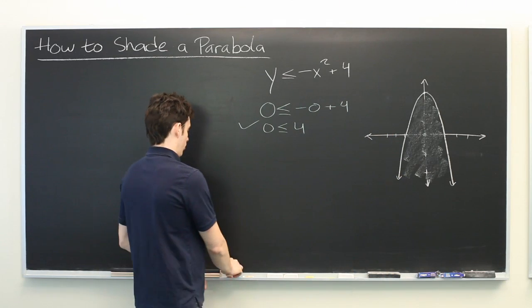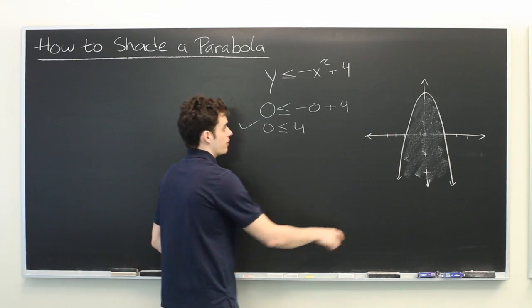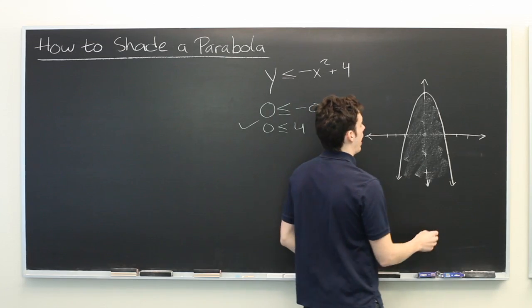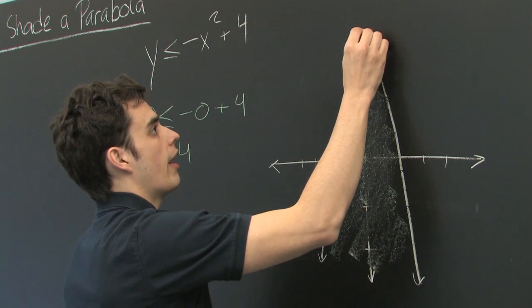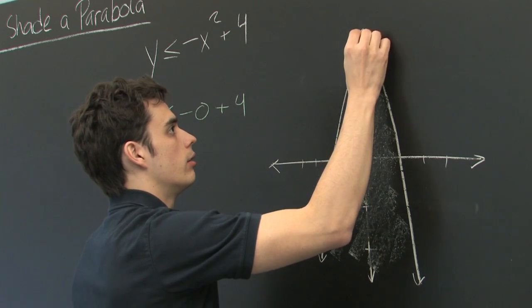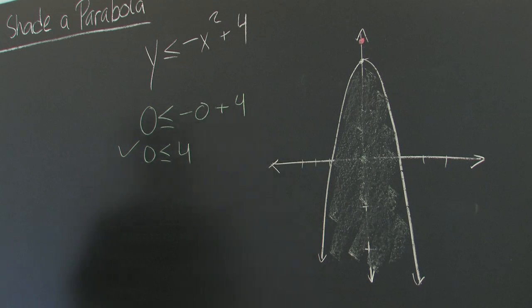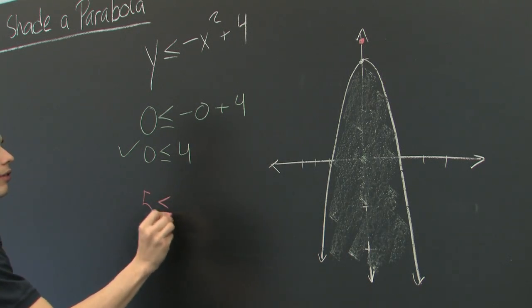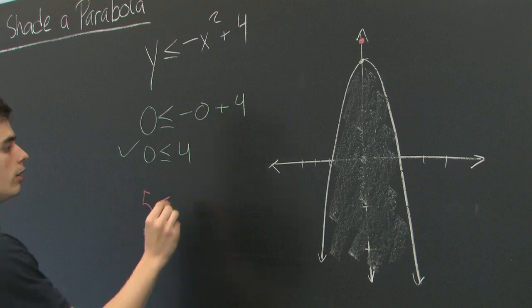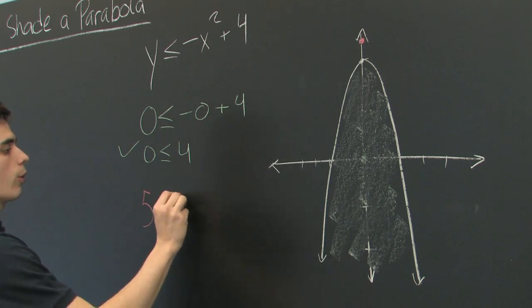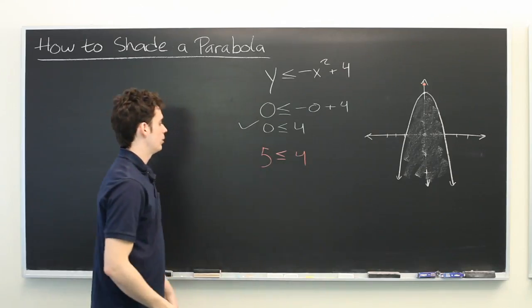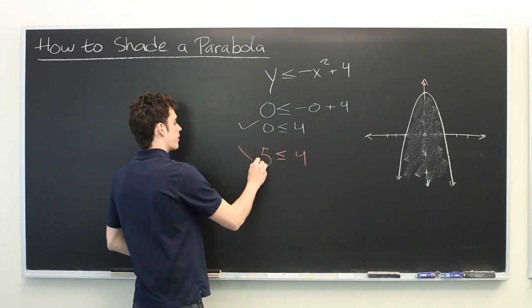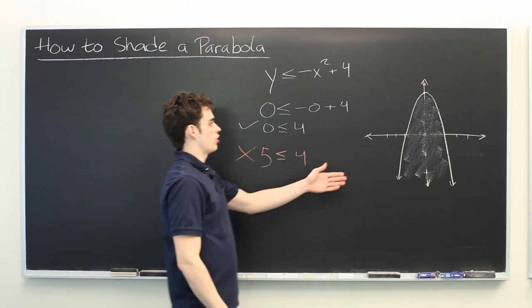If for example, we had selected something outside of this region, let's look at 0, 5, we'll see what happens there. 5 is less than or equal to 0 squared is 0 plus 4, 4. Well, that's clearly not true, so we're not going to shade the outside region.